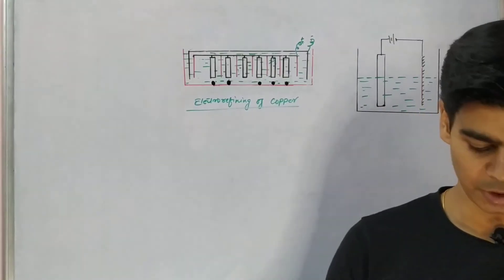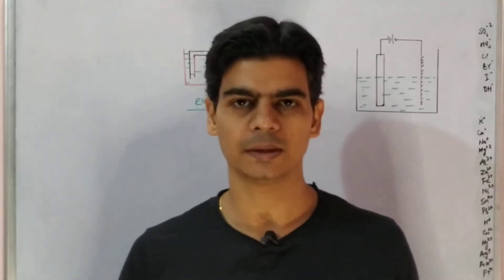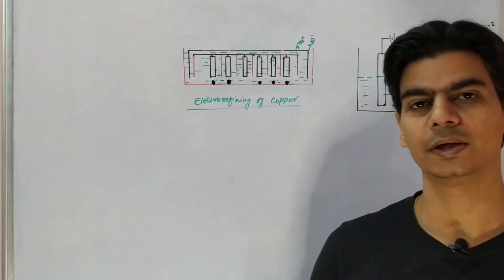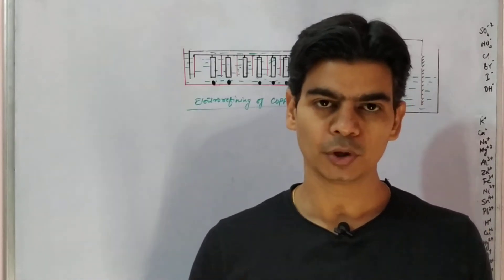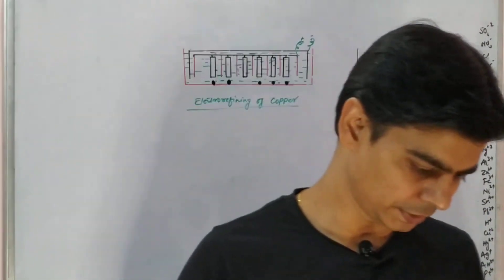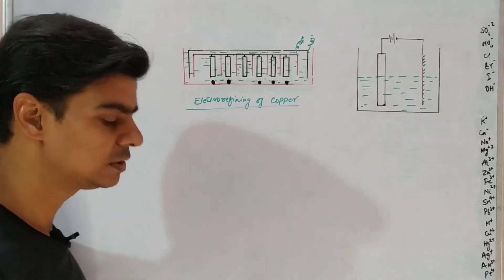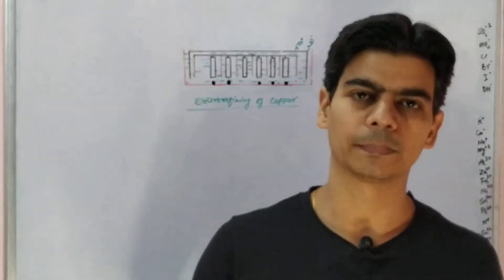In this video lecture we will go through the second application of electrolysis, which is electro refining of metals. Electro refining of metals means purifying metals with the help of electricity. In this video we will see electro refining of copper.